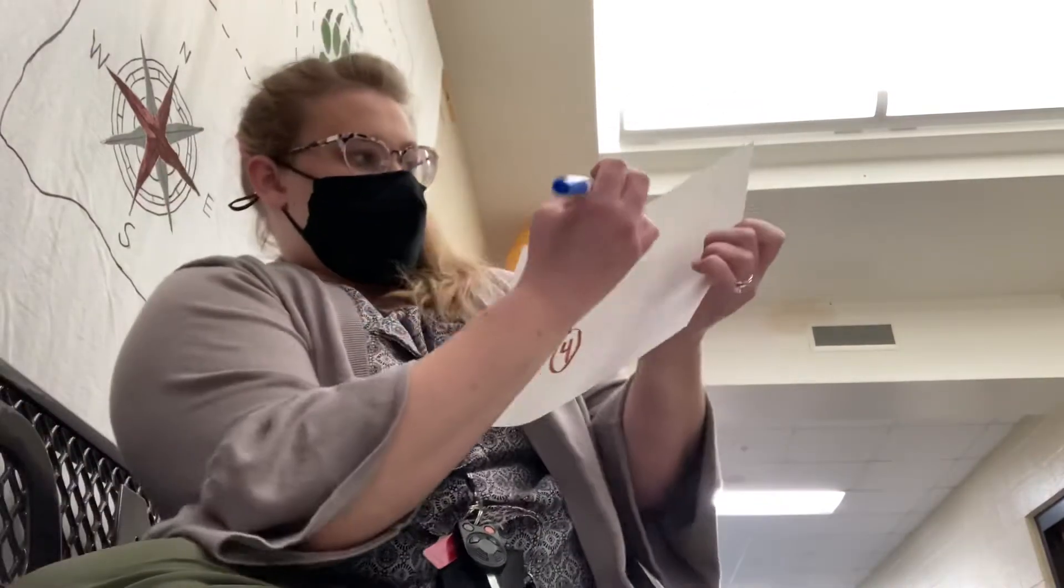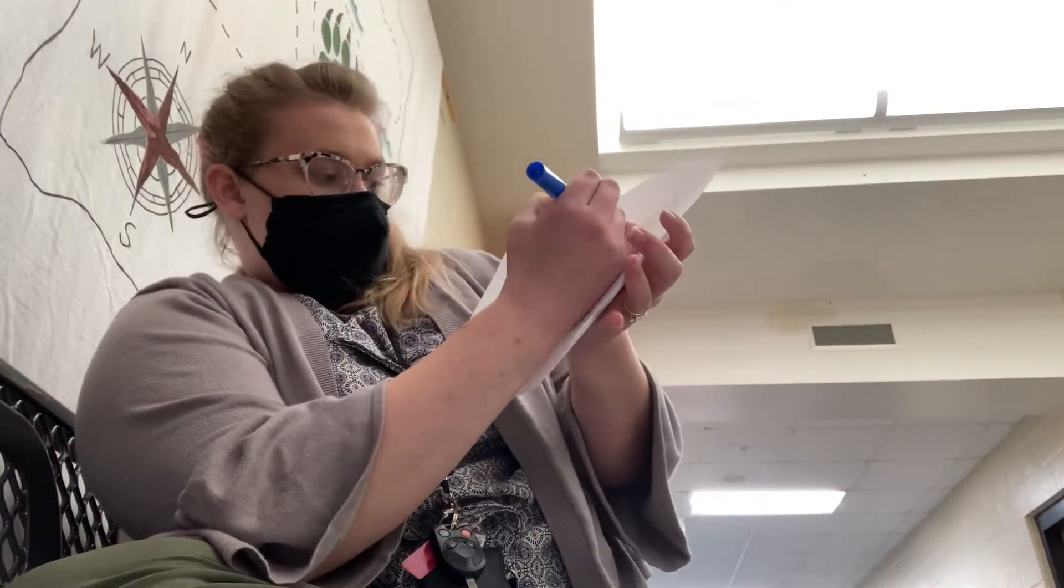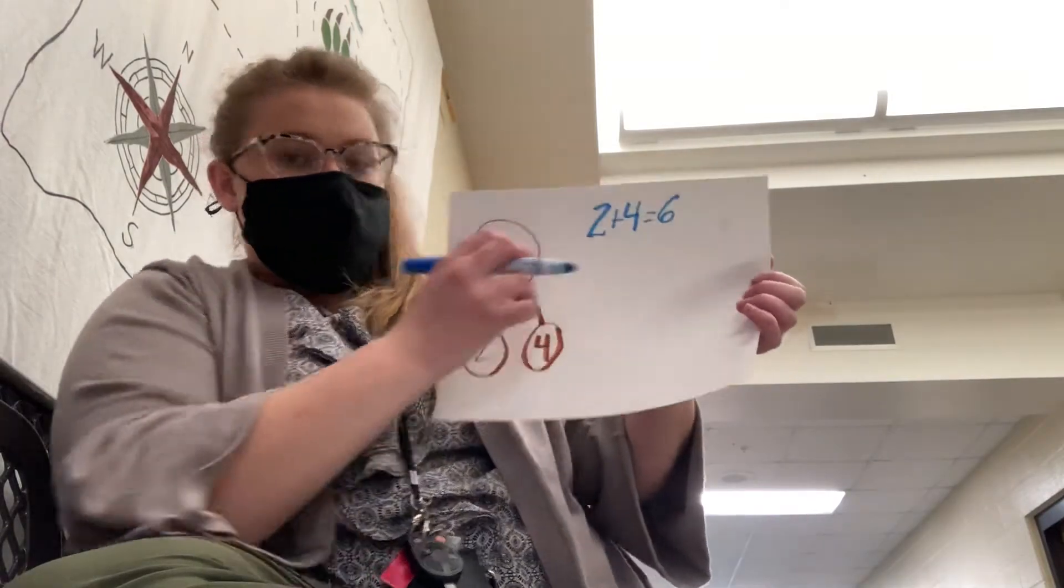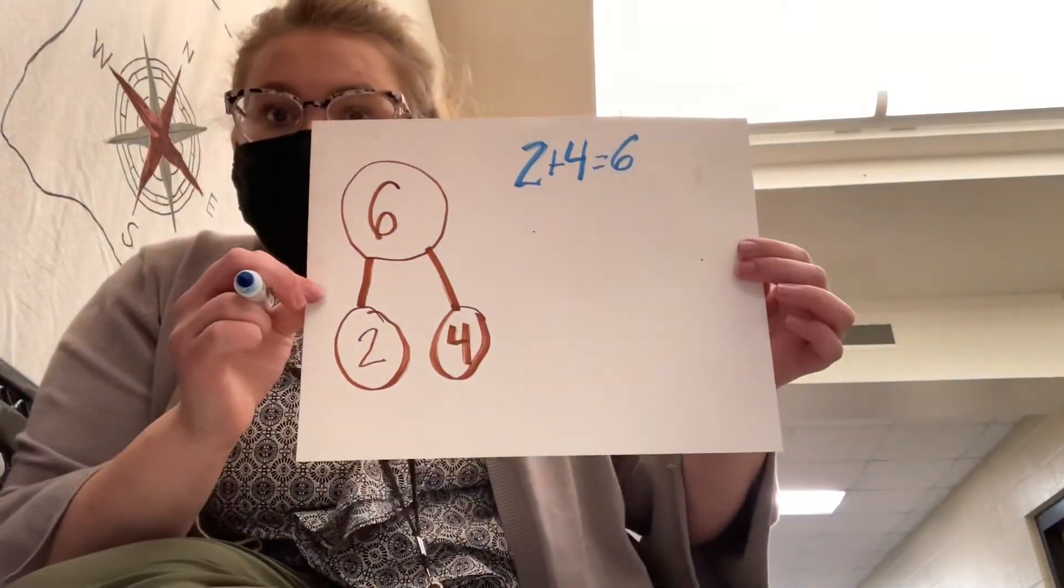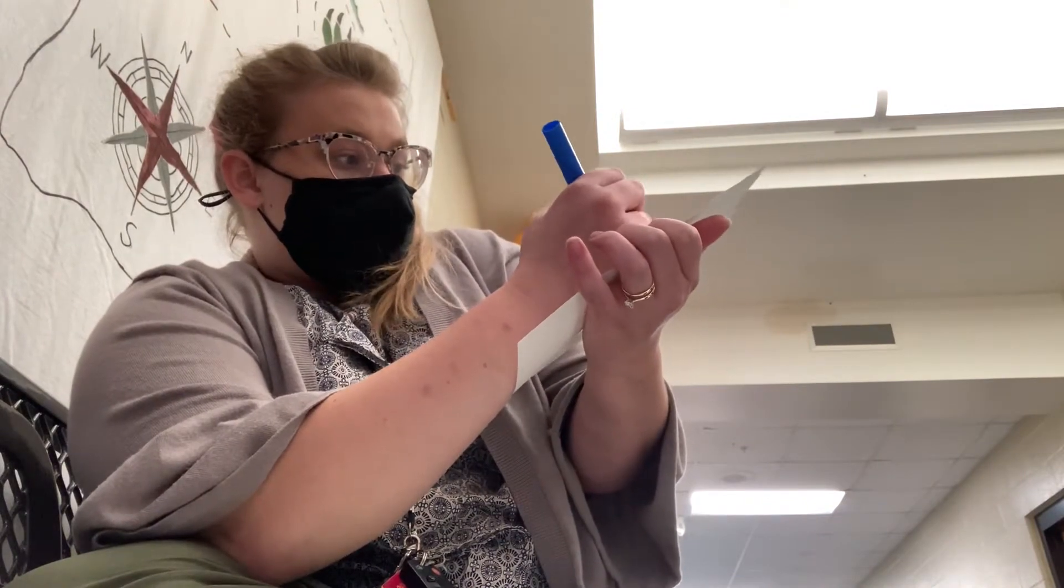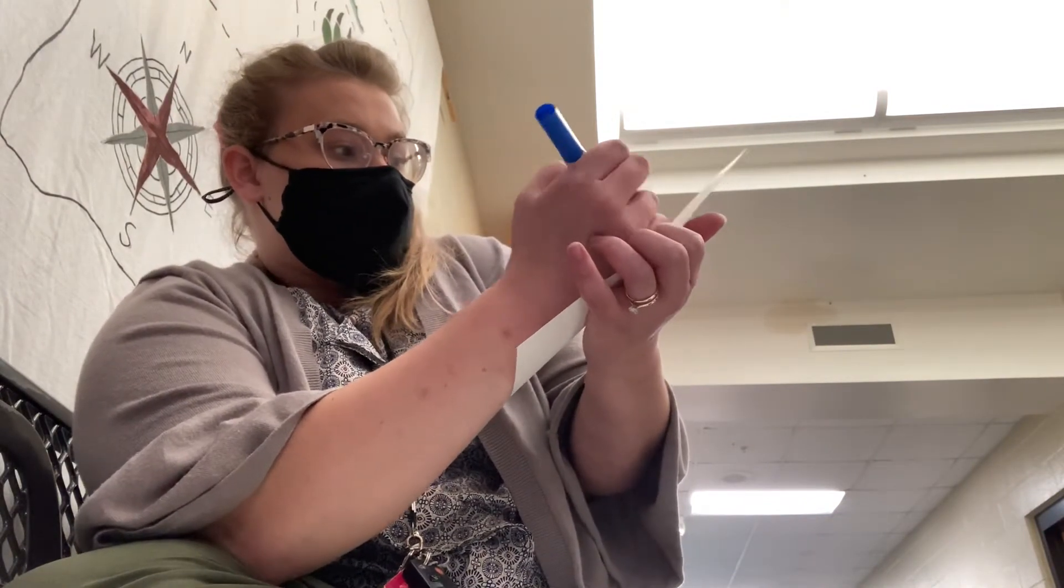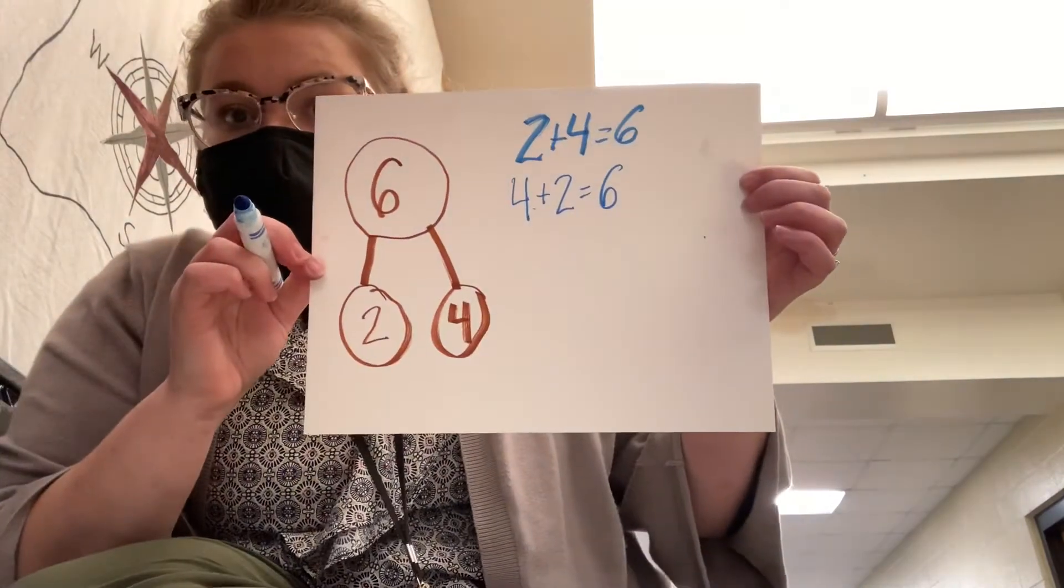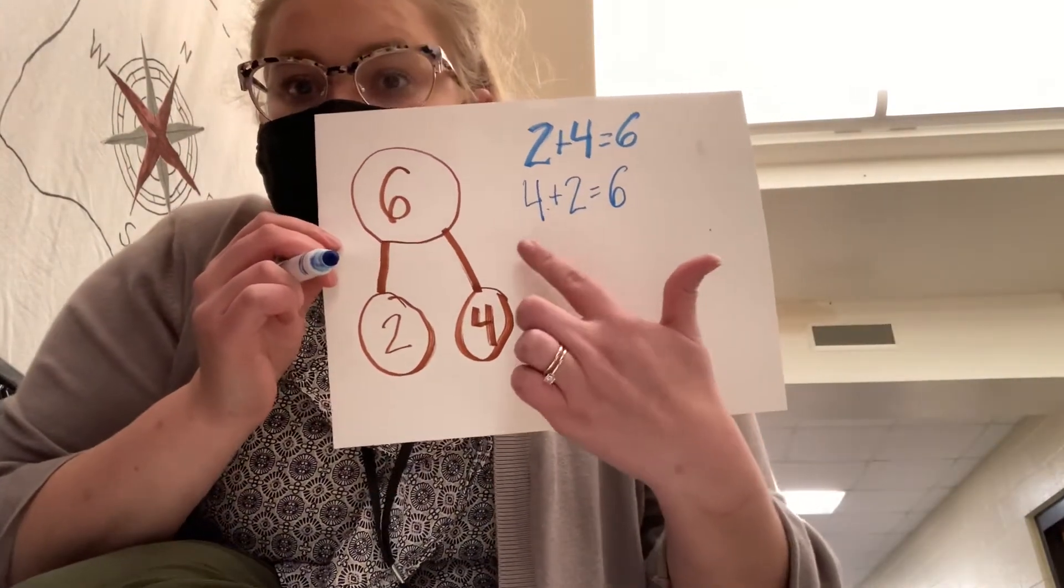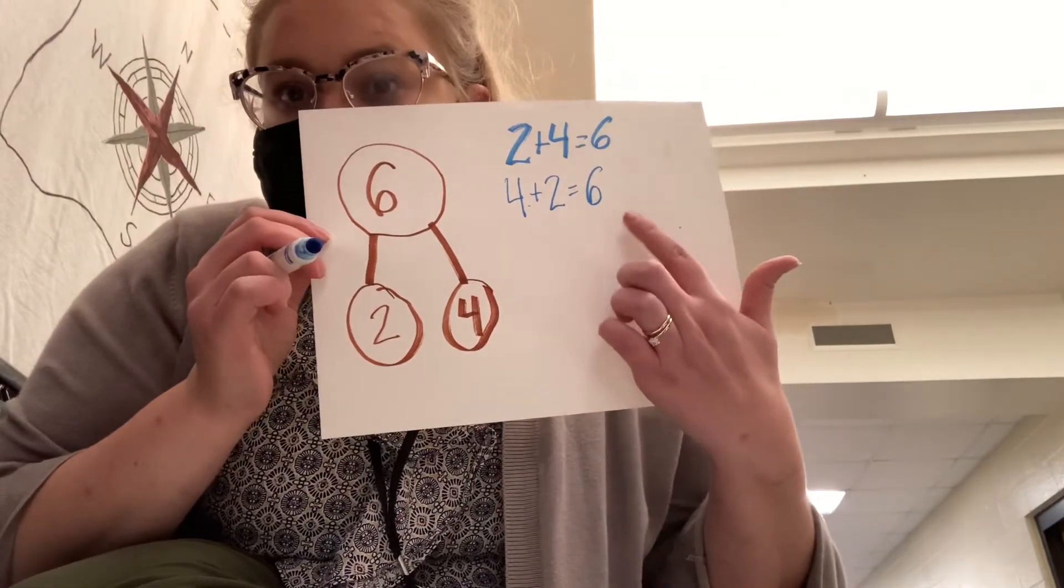We can do two plus four equals six. We can do four plus two equals six. Both of those show two parts coming together to make the whole.